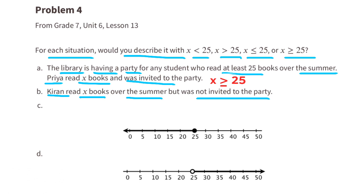Option B: Kieran read x books over the summer, but was not invited to the party. Since Kieran was not invited, that means Kieran must have read less than 25 books, because you had to read at least 25 books to be invited. We can represent the number of books Kieran read with x is less than 25.